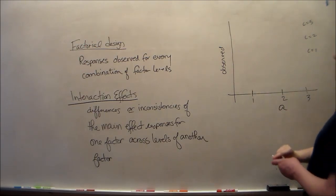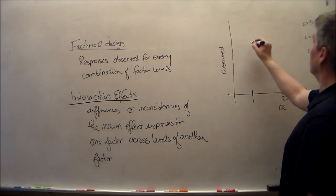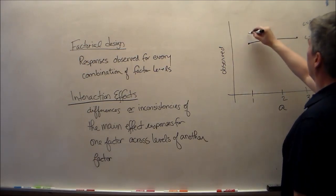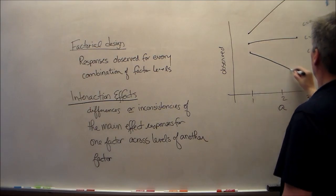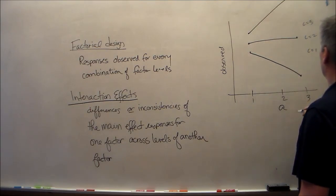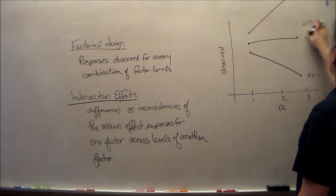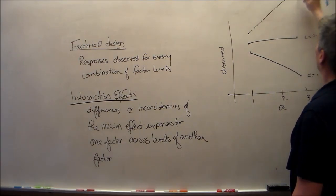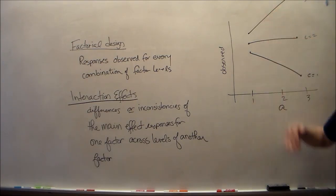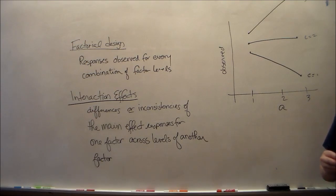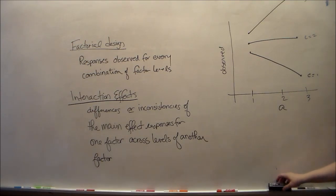Similarly, parallel lines illustrate no interaction because the effect of A — the slope — is the same regardless of the level of C. Same slope regardless of what C is, therefore there's no interaction. Non-parallel lines indicate an interaction, since the slope of A changes for the different levels of C.